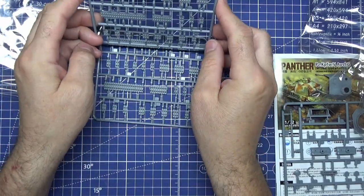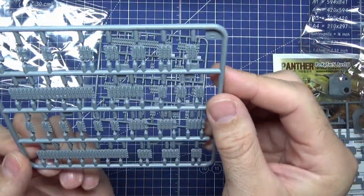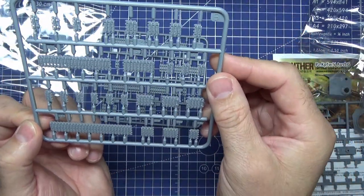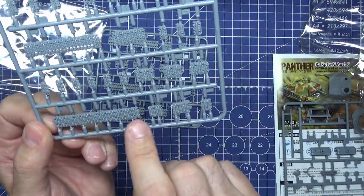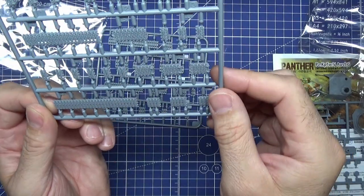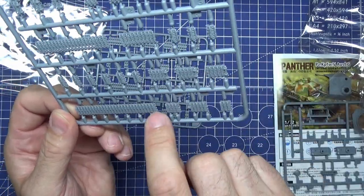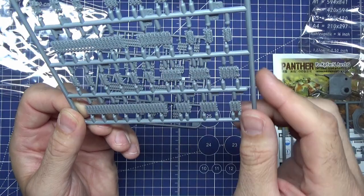They're both the same, two sets, one each side, and they are link and length and they are nicely detailed.